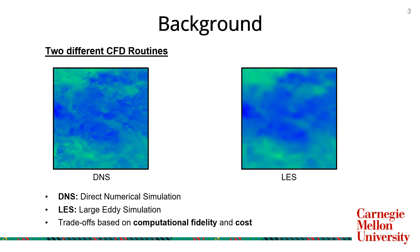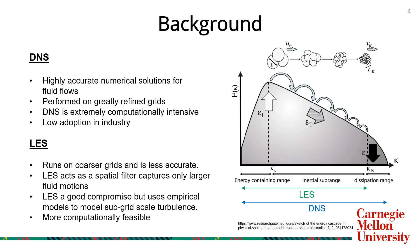Direct numerical simulation or DNS is a highly accurate but expensive method for computationally solving the Navier-Stokes equations, mostly due to the requirement of greatly refined grids.